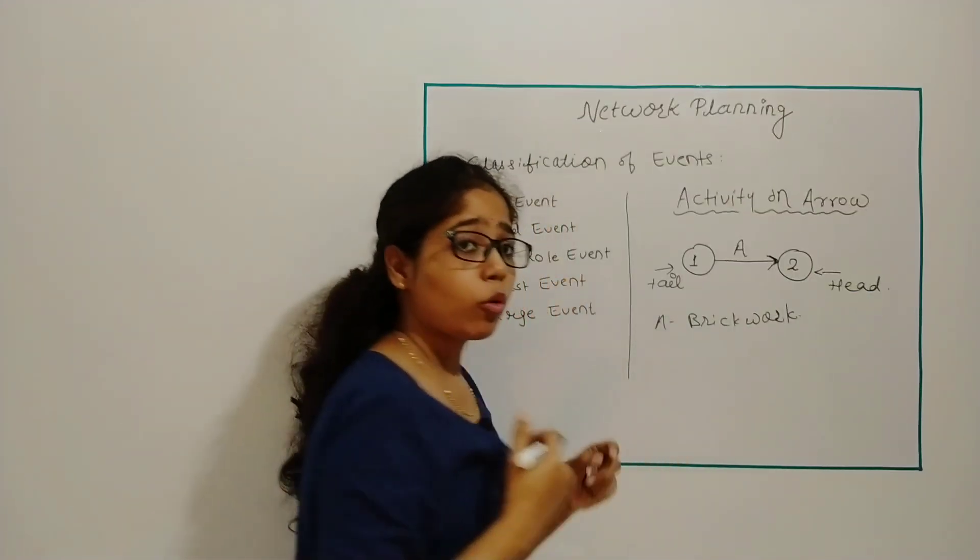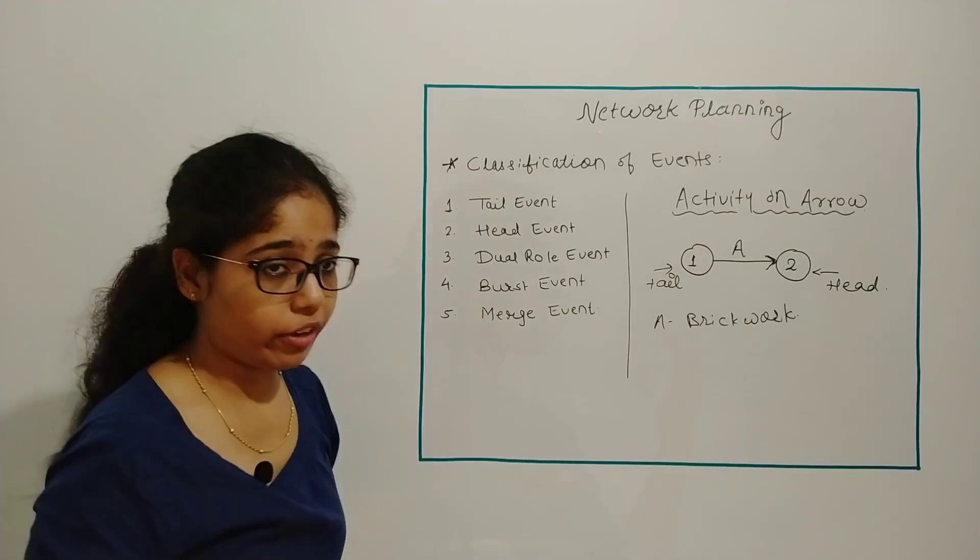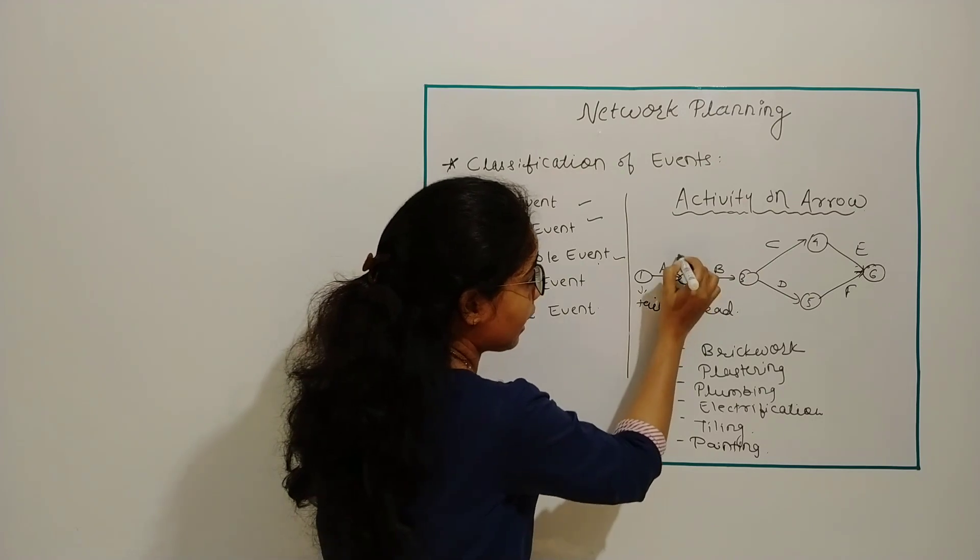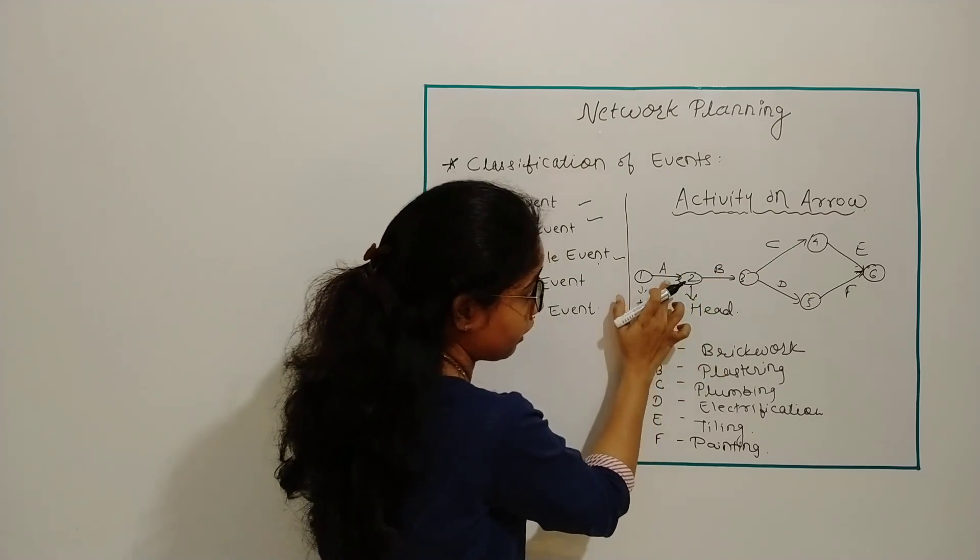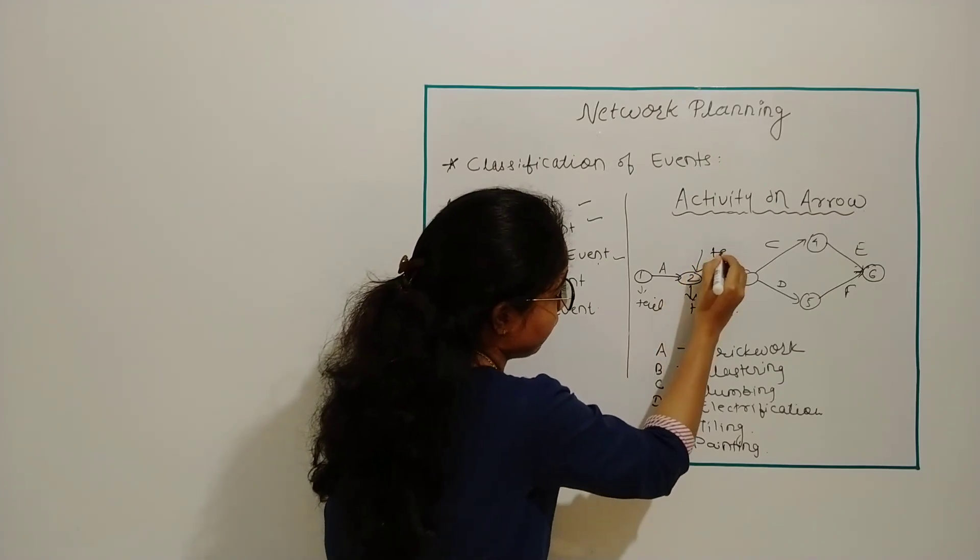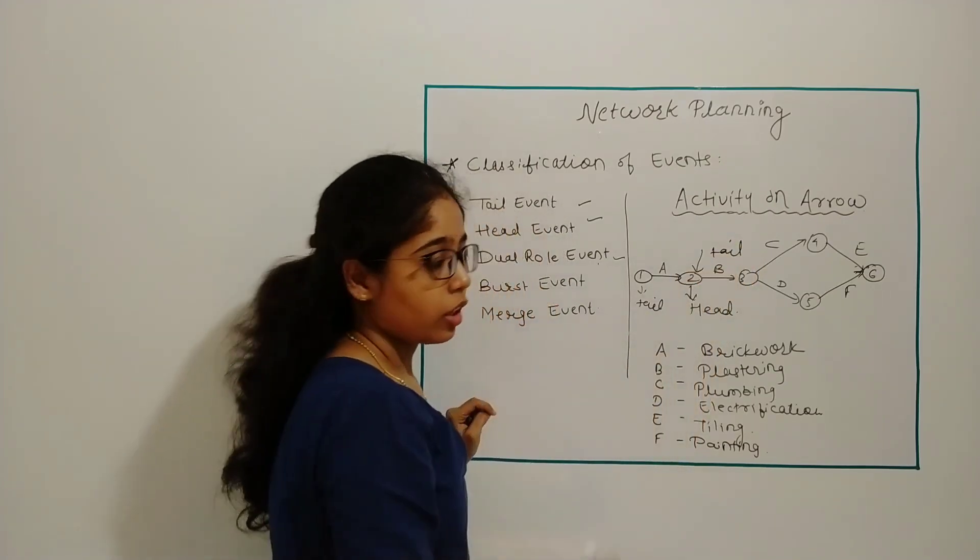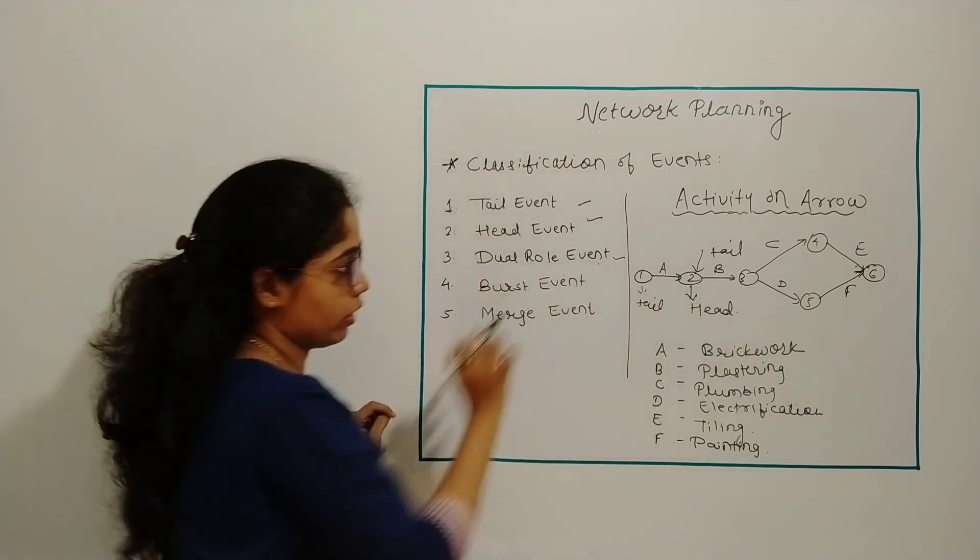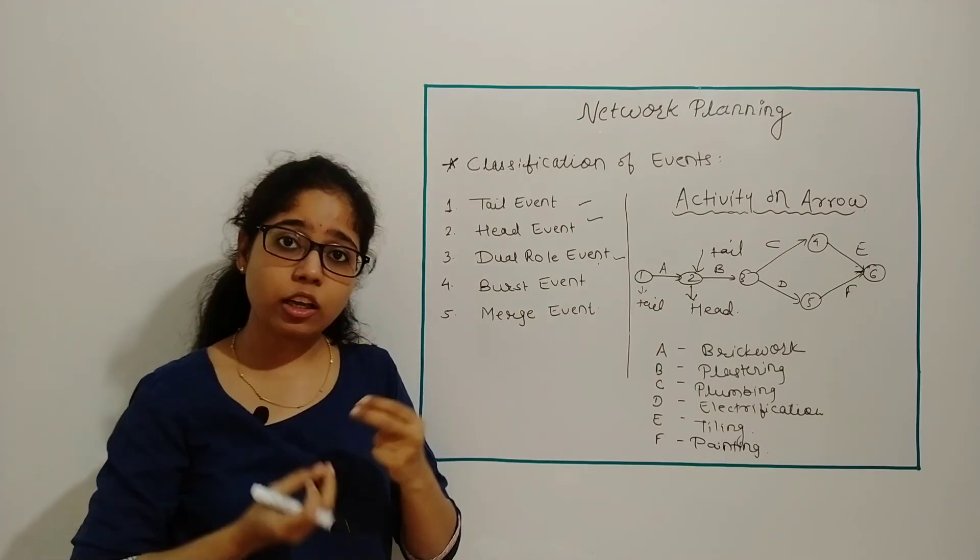Now moving towards dual role event. You can see this node 2 is acting as head event for activity A and tail event for activity B. So this node 2 is called as dual role event because it is playing both roles, head and tail, simultaneously.